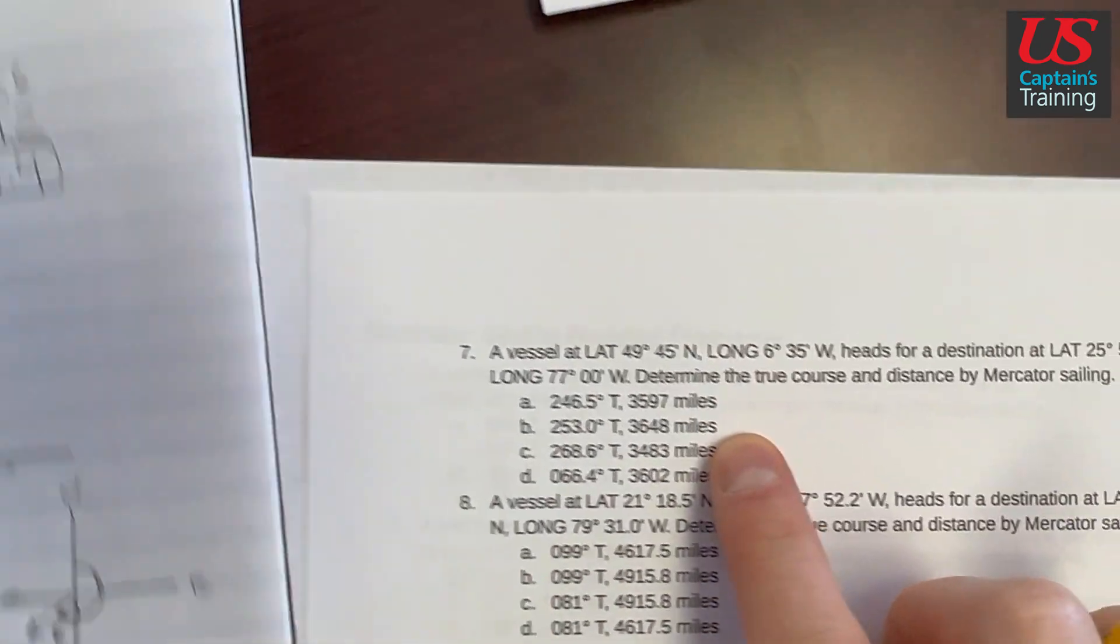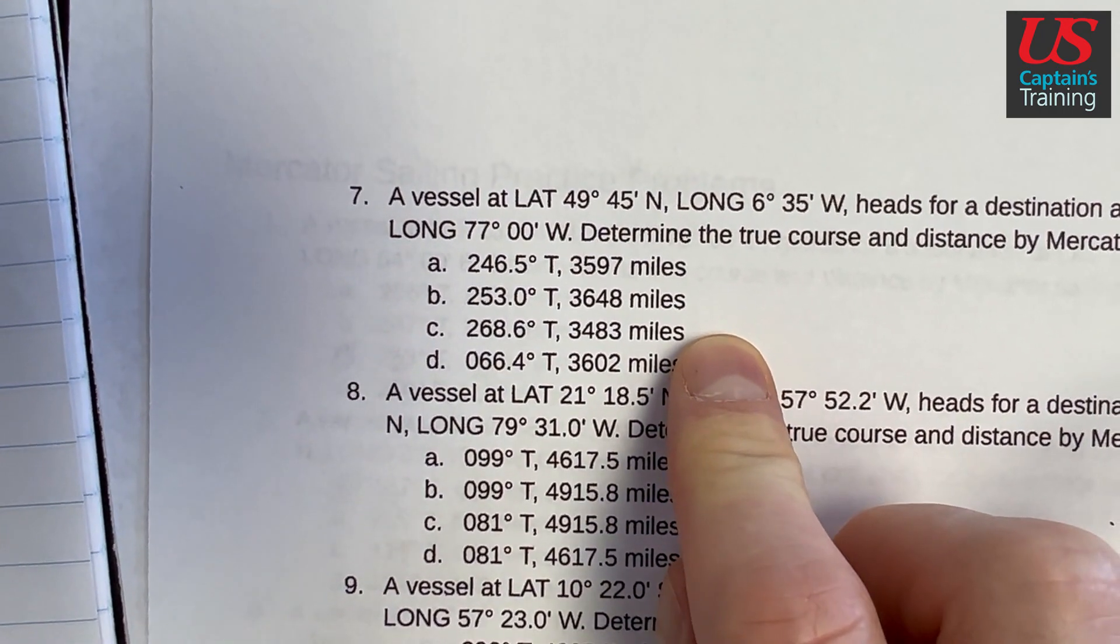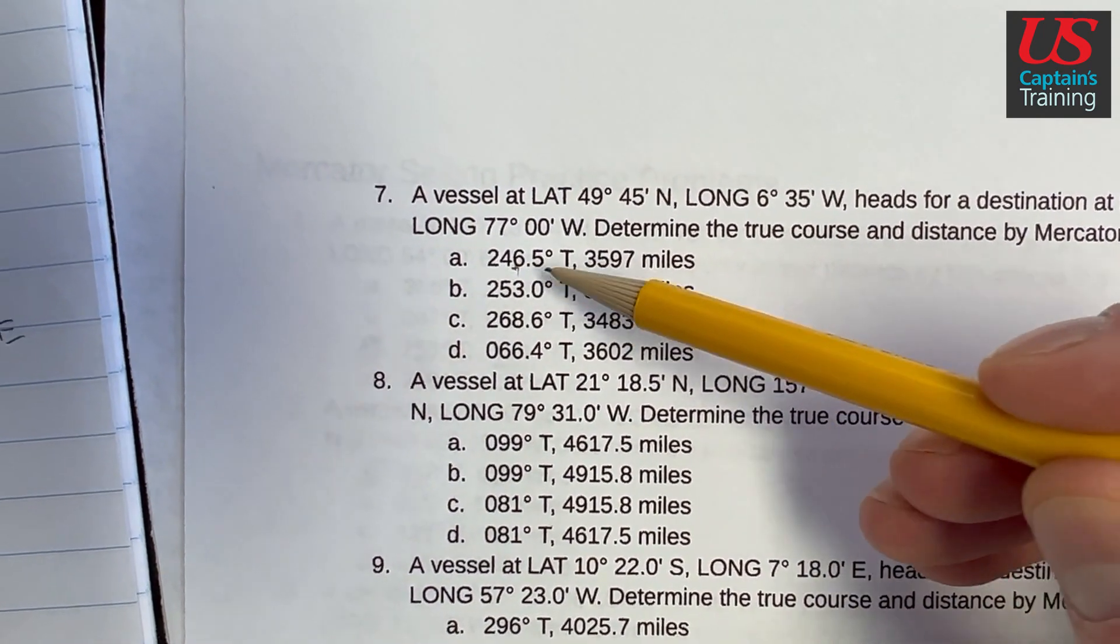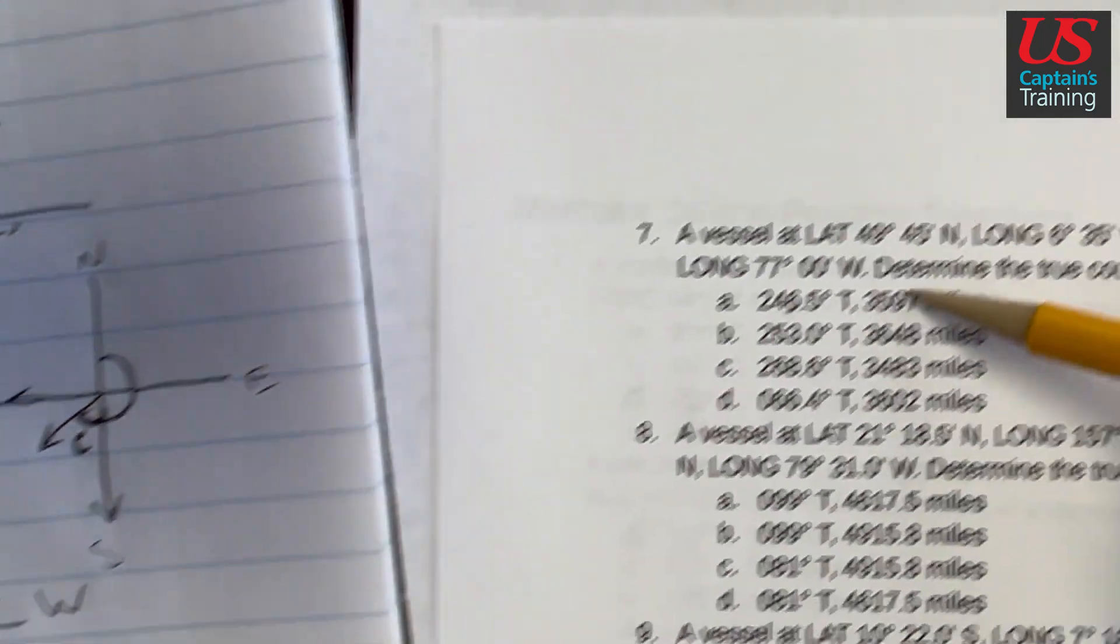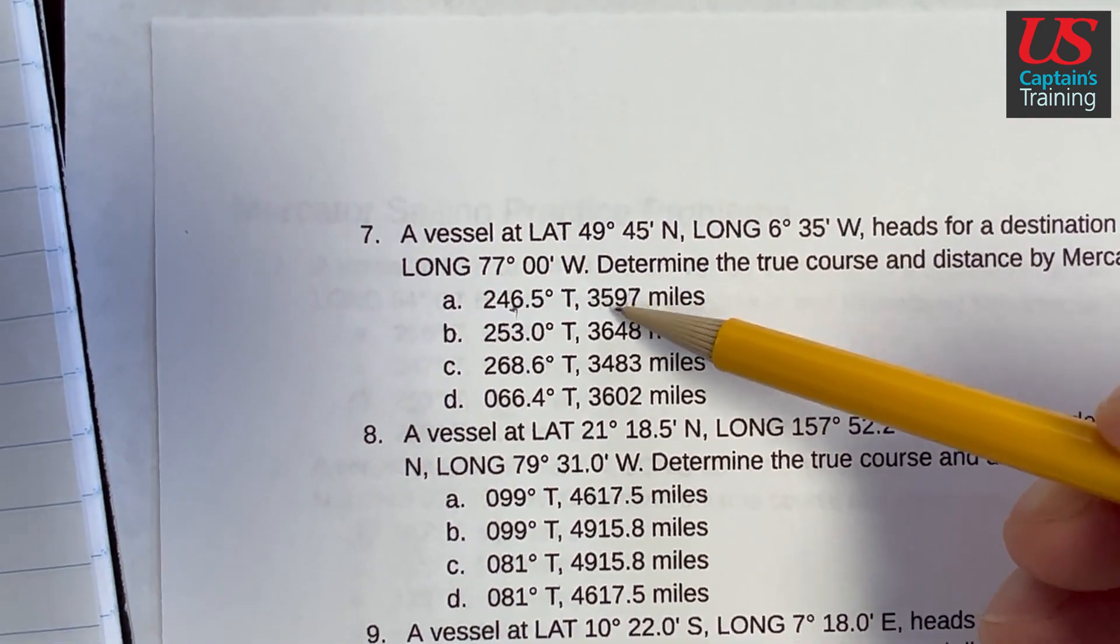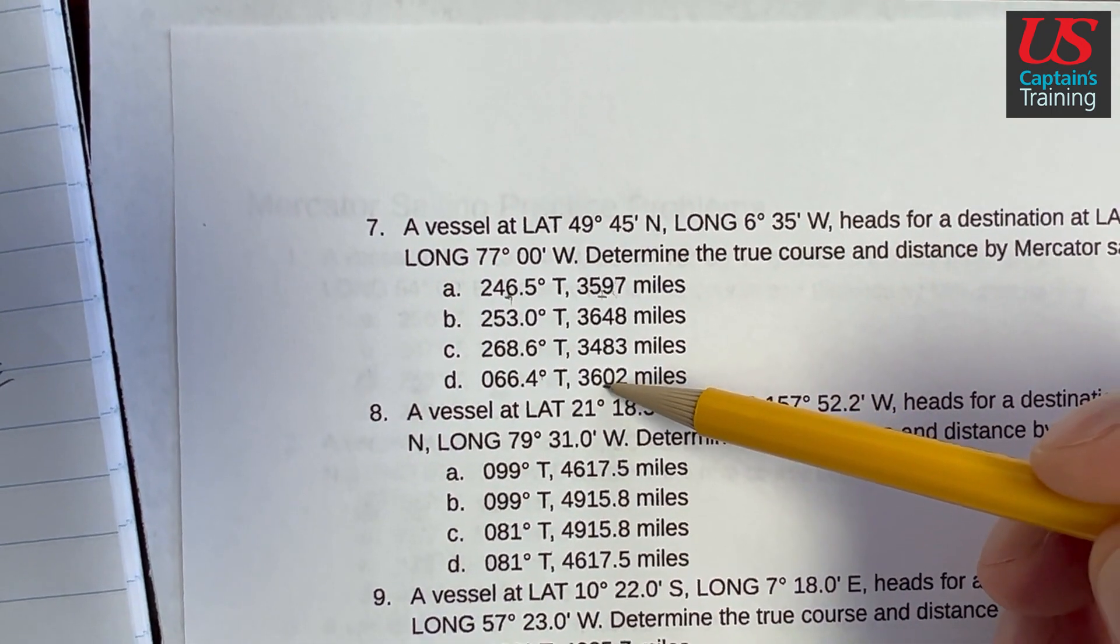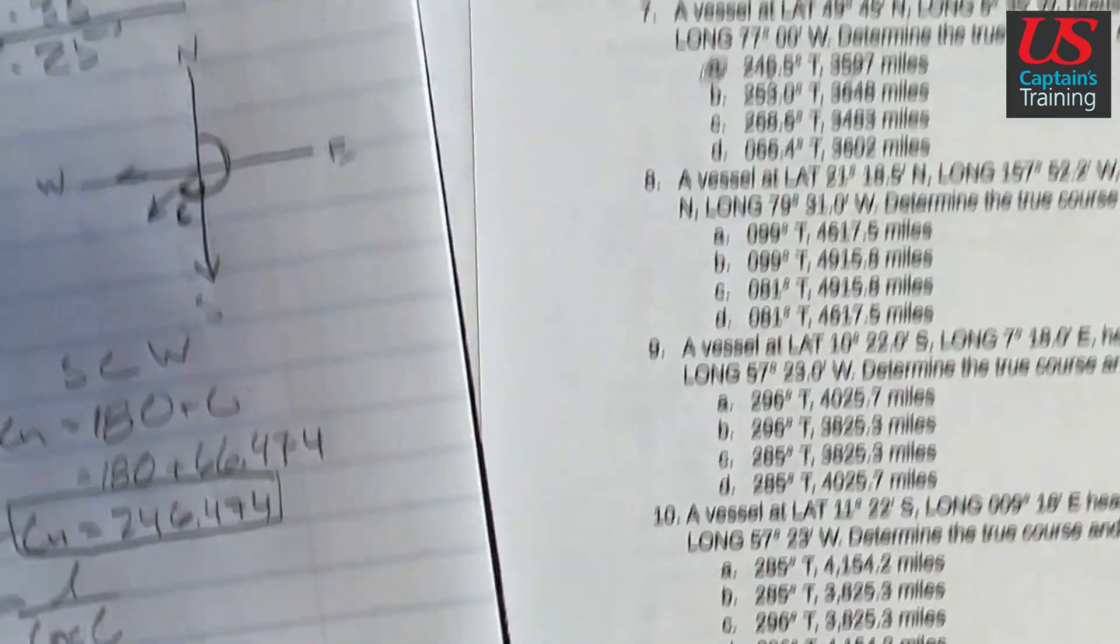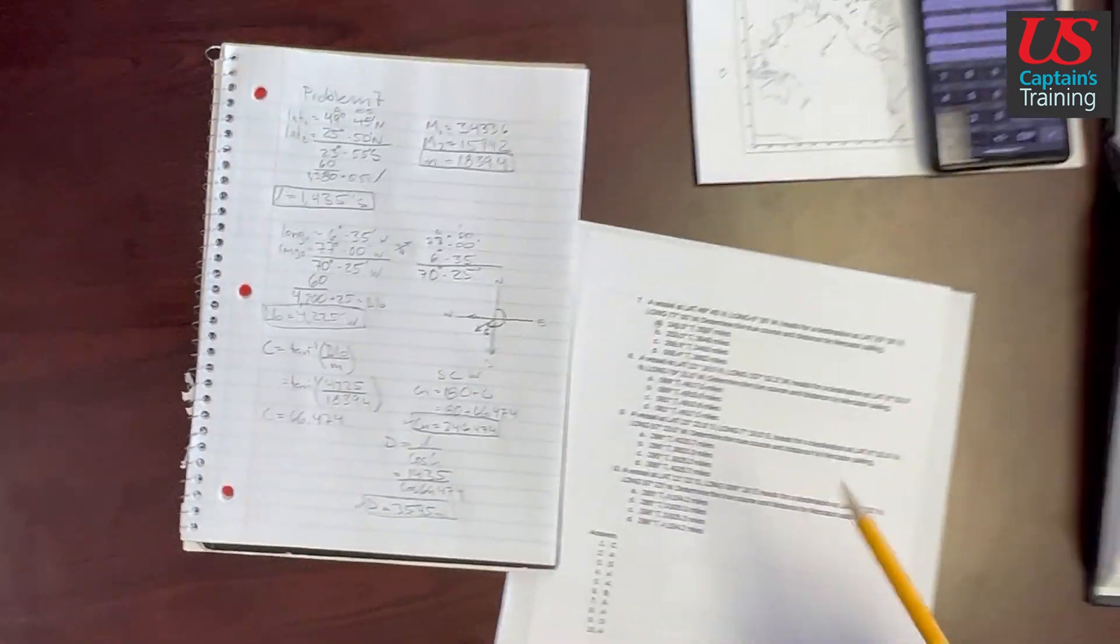So now we can go to our answers, see if we got it. This is seven. So we got, what do we get for our courses? 246.5. 246. That one's looking good. 246.5. And our distance was 3595. 3597. That's pretty close. That's like a rounding error. 246.5. Is anything else close? This one, but the course is way off. I'm going with A. Let's check it out. 7A. Yeah, right here. 7 is A. So that was Mercator Sailing Practice Problem 7.